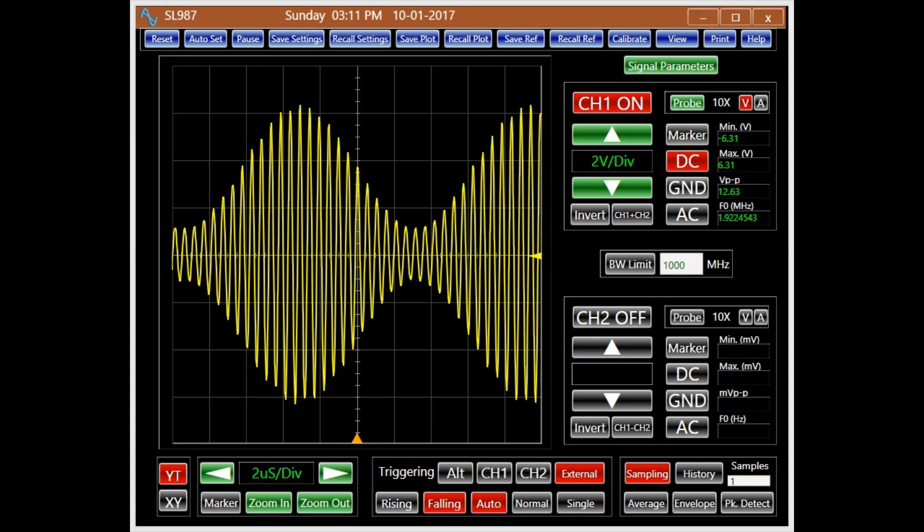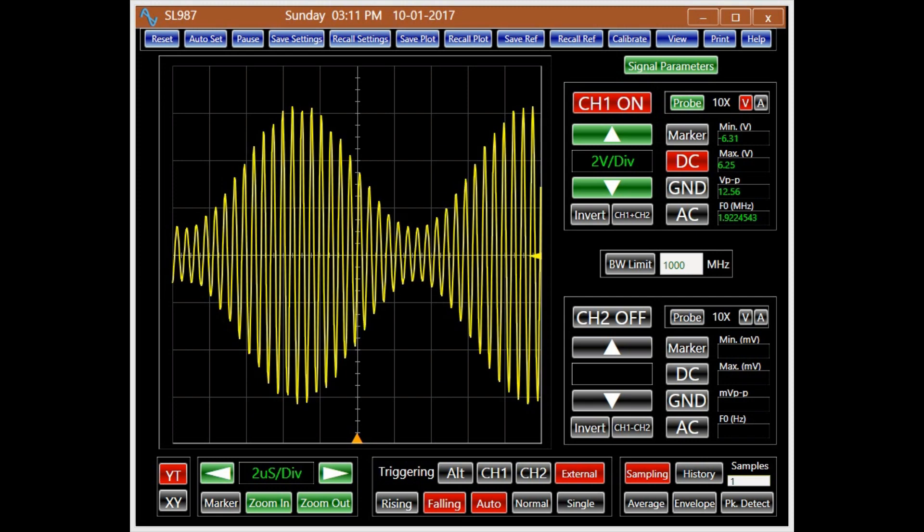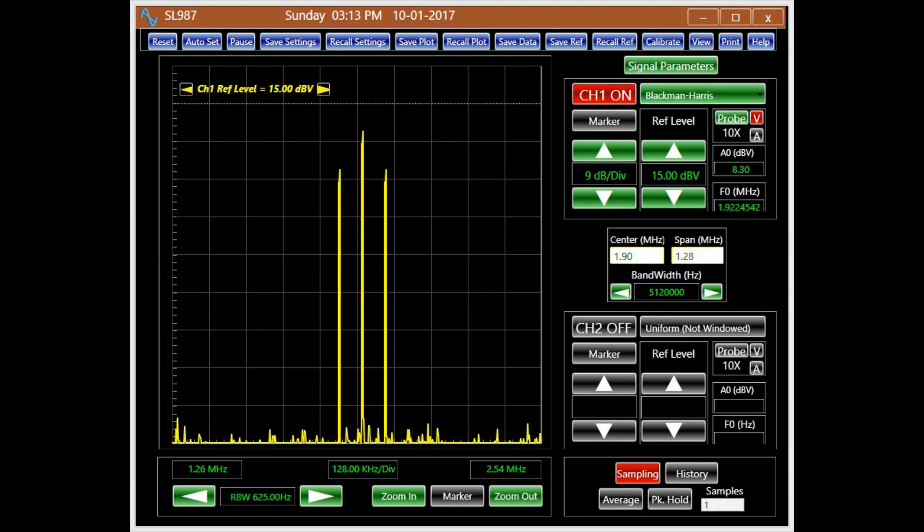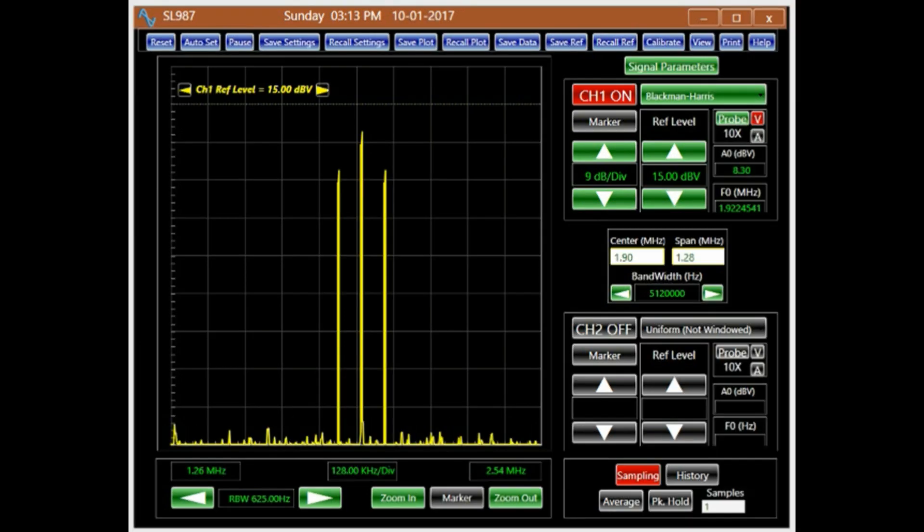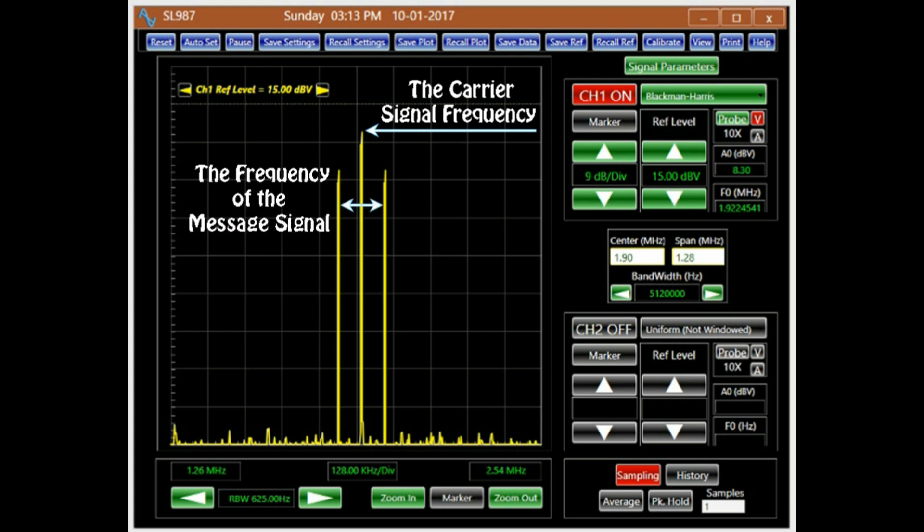In AM the amplitude of the modulated signal represents the message. The spectrum of an AM signal, generated by mixing a carrier signal and a sine wave, displays the carrier signal spectra with two sidebands corresponding to the frequency of the message or the modulating signal.